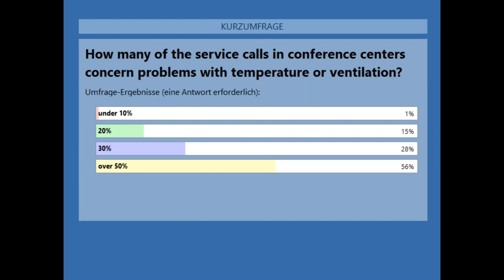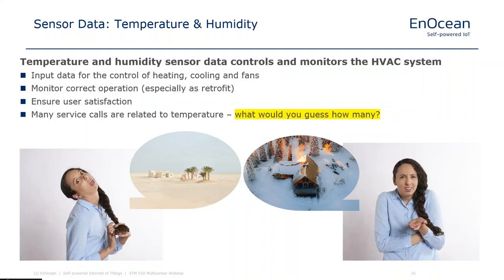Looking at the results — the vast majority, over 50 percent, believes that over 50 percent of service calls are related to temperature and humidity. And that is true. Studies in conference areas consistently show the biggest area of dissatisfaction is not a lack of coffee or Wi-Fi problems. The number one source of complaints leading to a service call is temperature and humidity — and this is something that can be very easily addressed by monitoring your room climate.